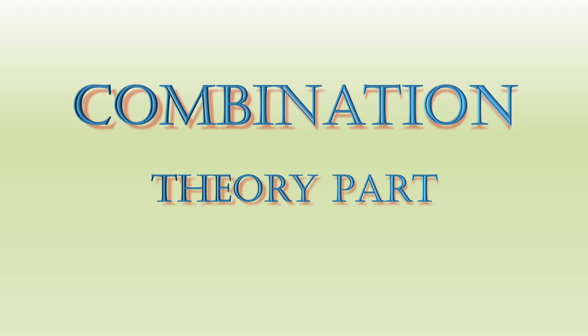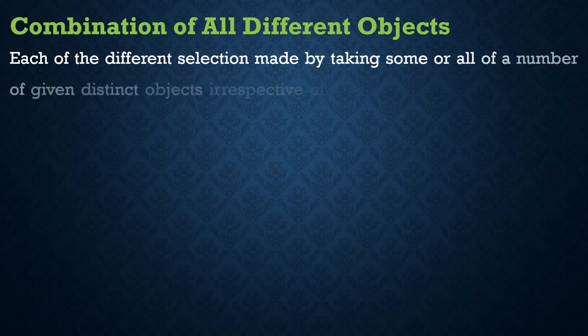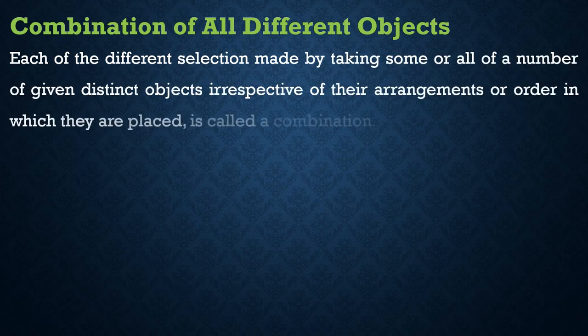First, let's see the definition of combination. A combination involves all different objects — the objects provided to us will be different and distinct. No two objects are the same. Each of the different selections made by taking some or all of a number of given distinct objects, irrespective of their order of arrangement, is called a combination.